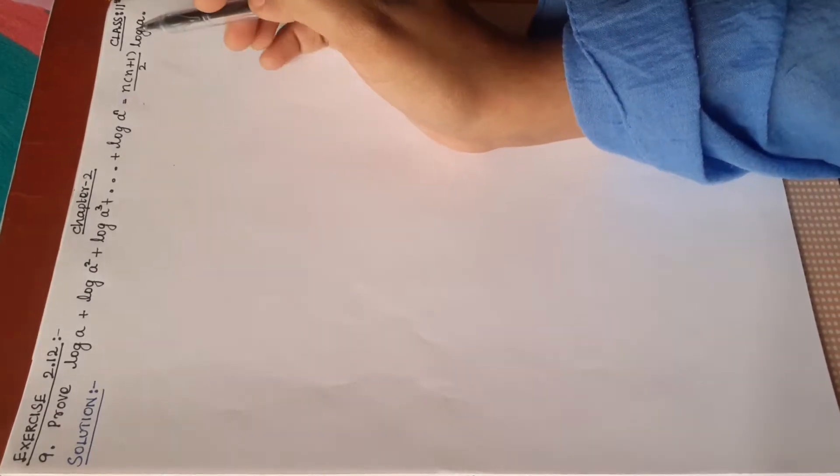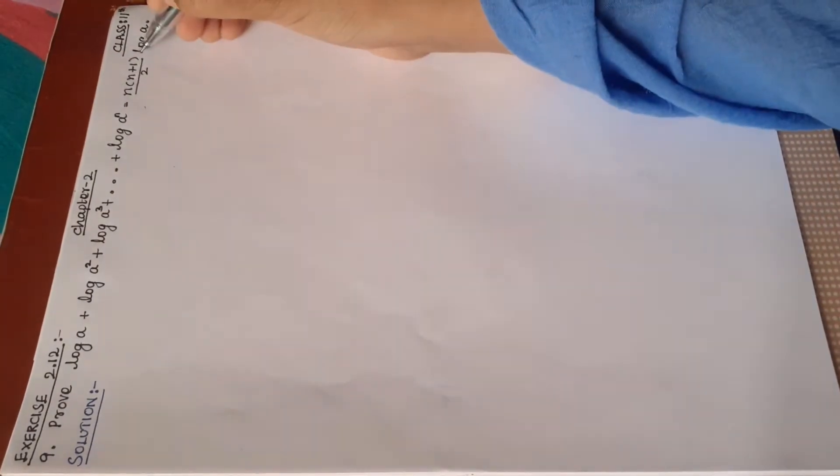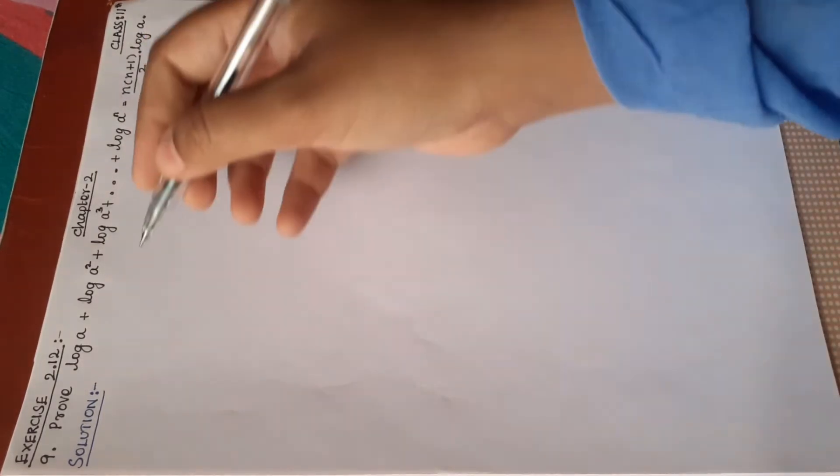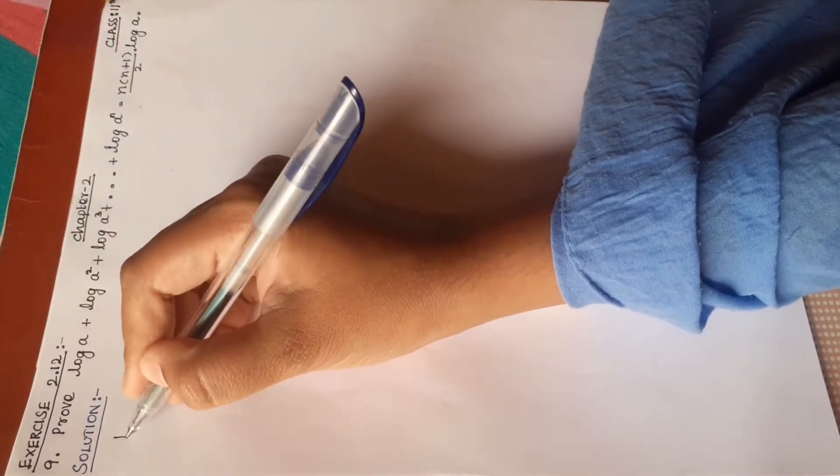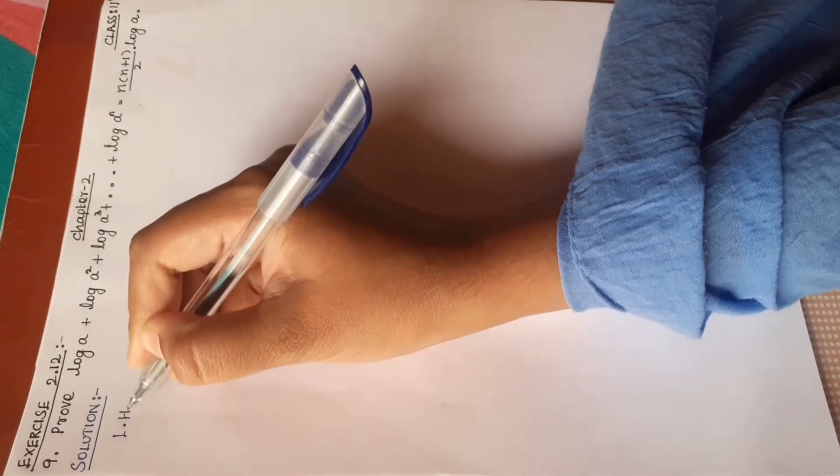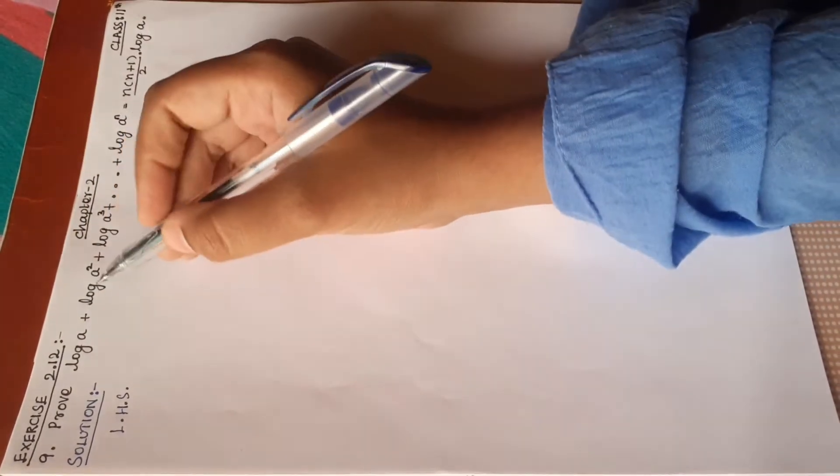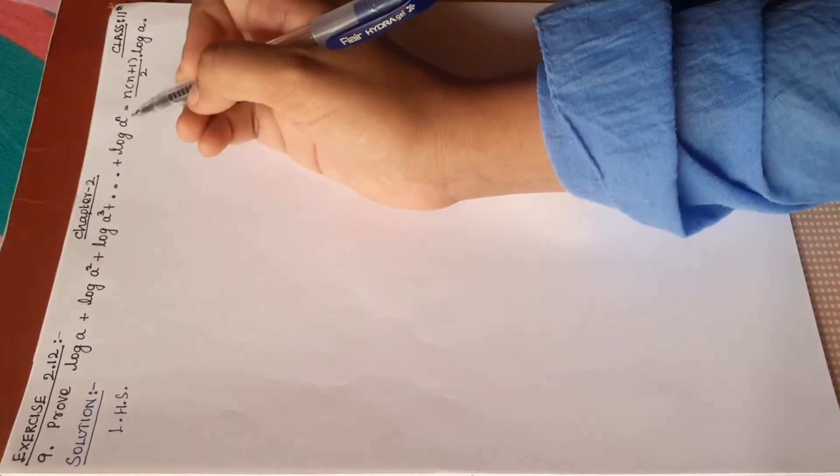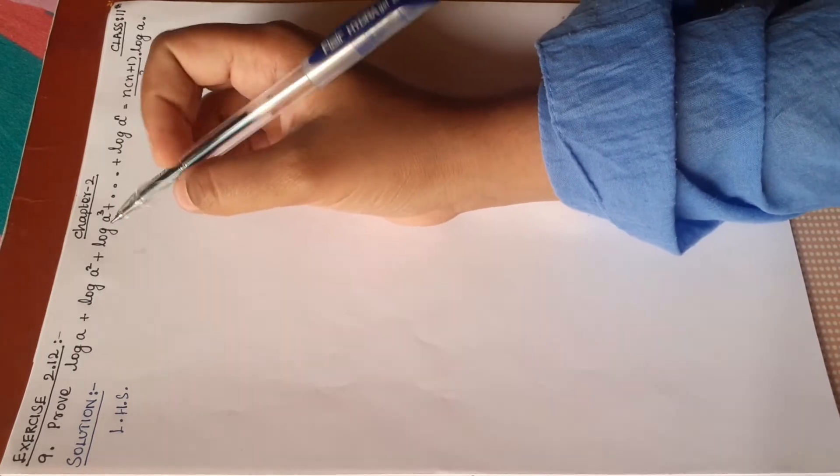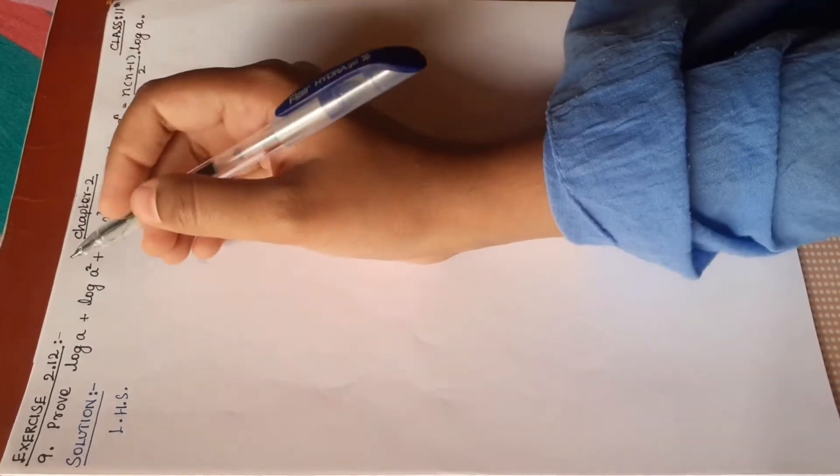n(n+1)/2 × log a. So, as usual, we have log a + log a² + log a³ + ... + log aⁿ. The first step is to use the power rule.